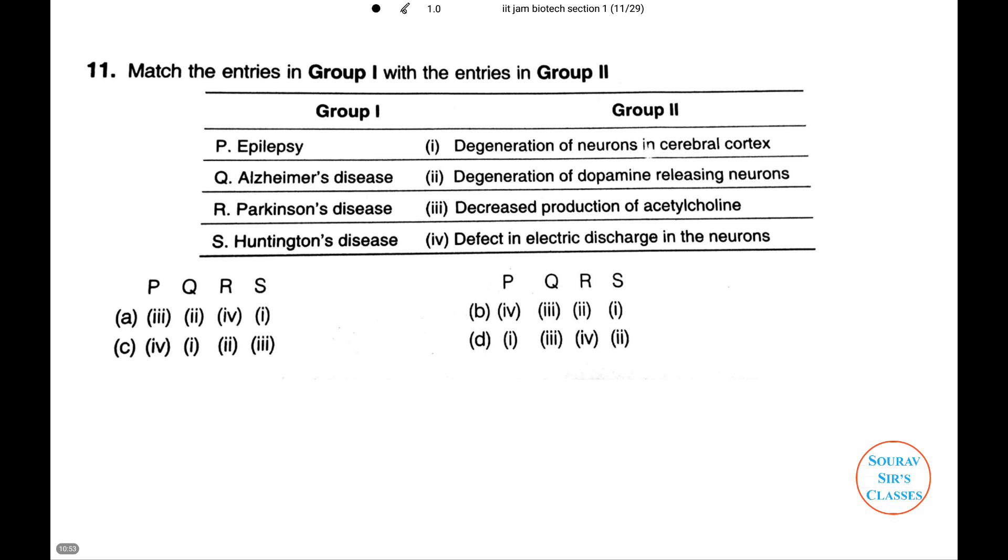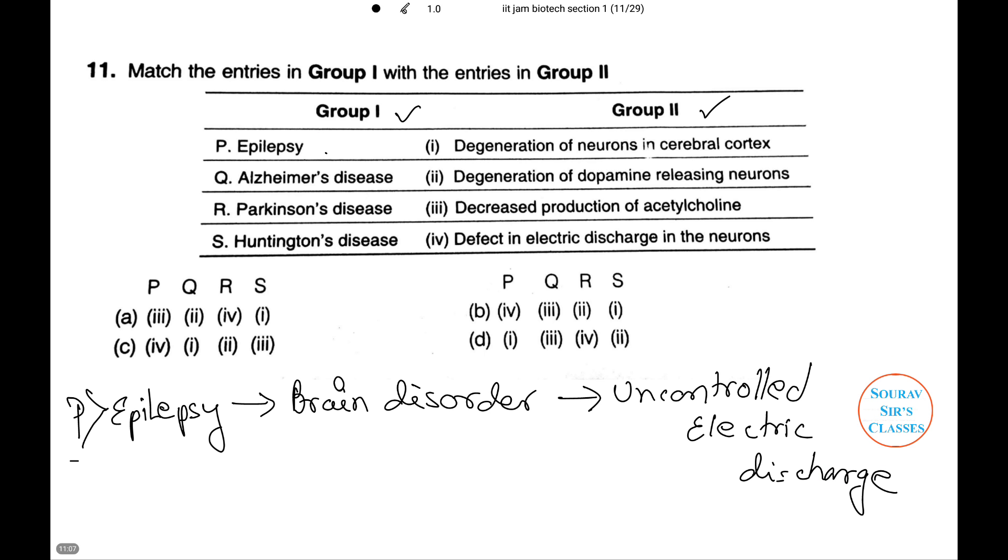Now, let's do a fun question. We need to match group 1 with group 2. In group 1 we have certain disorders or diseases and in group 2 their causes. Let's start with the first one. Epilepsy is a brain disorder in which there are repeated seizures. It is caused by an uncontrolled electric discharge from the cerebral cortex. Thus, from our option, number 4 is the answer to B.